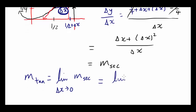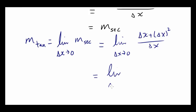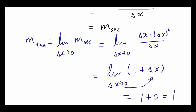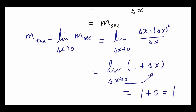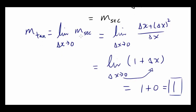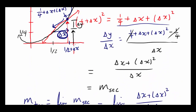That's the limit as delta x approaches 0 of delta x plus delta x squared over delta x. Dividing both terms by delta x, we get 1 plus delta x. Since delta x is approaching 0, we plug in delta x equals 0 to get 1 plus 0, which equals 1. That's the slope of the tangent line at x equals 1 half, because that's what the slope of the second line approaches as we get closer and closer to the point 1 half, 1 fourth.